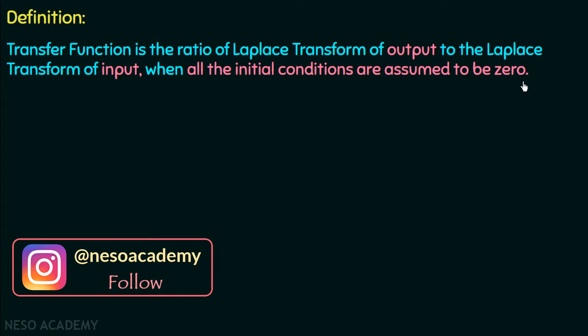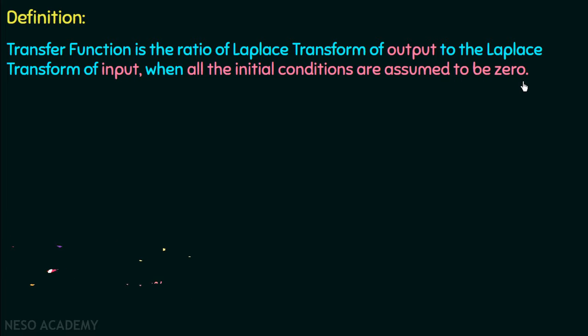We define the transfer function for an LTI system, and in the case of LTI systems, all the initial conditions are zero. We have discussed the reason in the previous lecture. If the initial conditions are not zero, then the system will not be a linear system and hence will not be LTI. That's why, to define the transfer function, all the initial conditions are assumed to be zero.